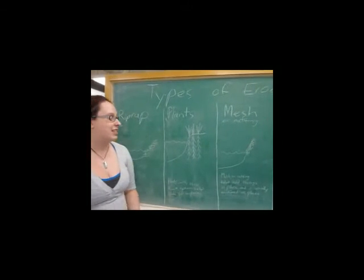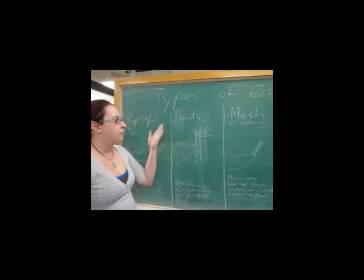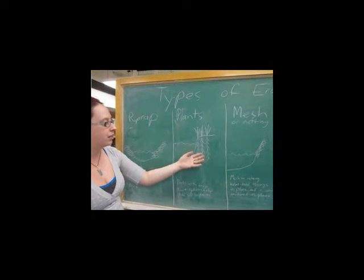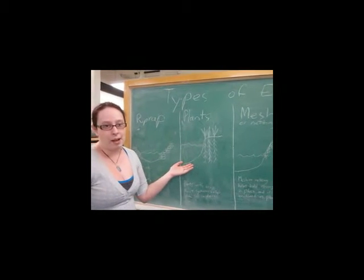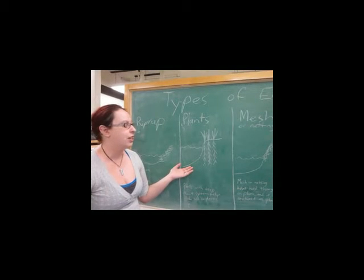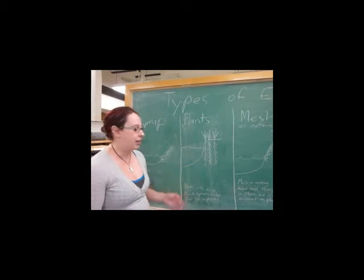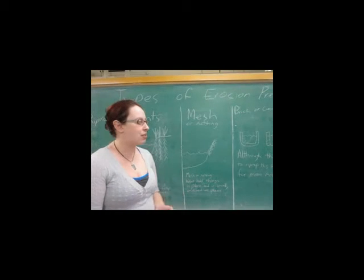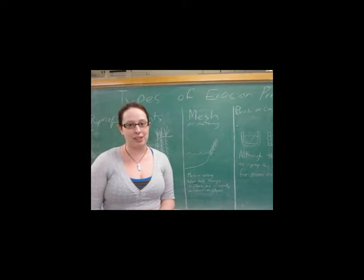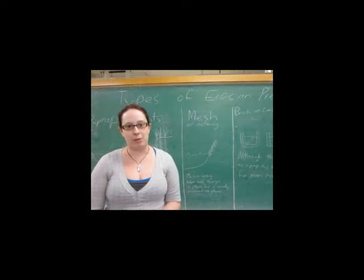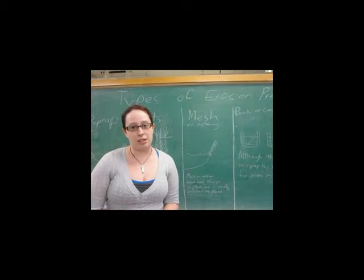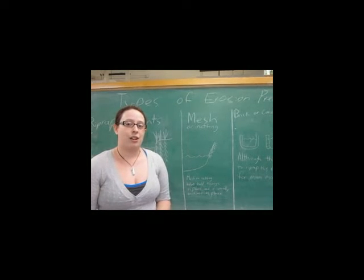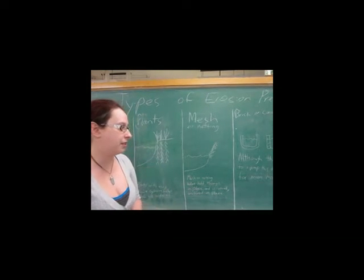The next way to prevent erosion that we're going to go over is plants. Using native plants that have deep roots, you can help prevent bank erosion just by having the roots hold the sediments together. Usually these are plants that have very complex root systems and are native to the plains. Mesh or netting is used to prevent erosion by holding things in place, usually anchored with rods drilled into the sediments or rock. This is used on steep banks where the others are not feasible due to the steepness.